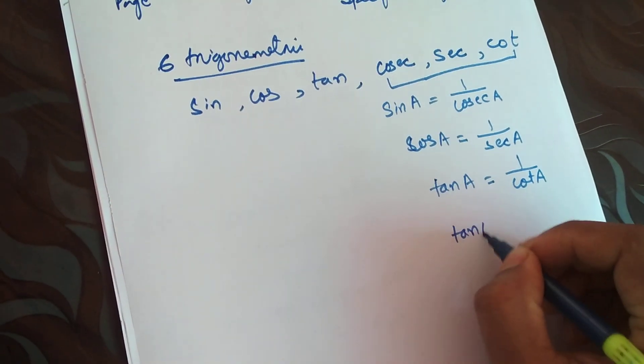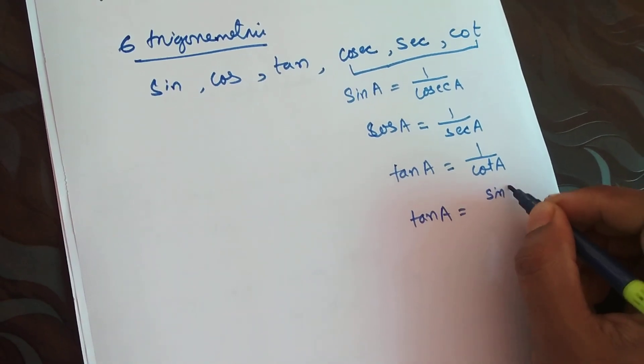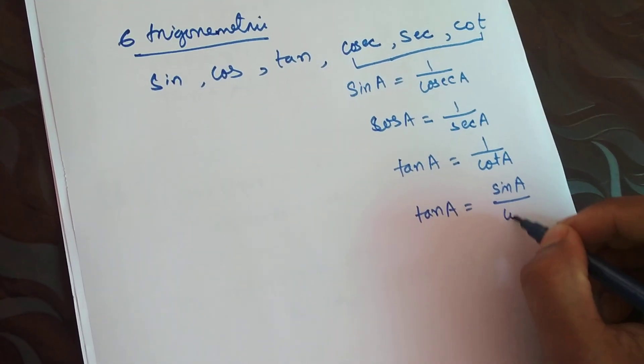And one more thing: tan A, where A can be any angle, can be written as sine A by cos of A.